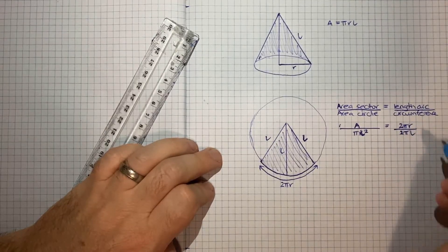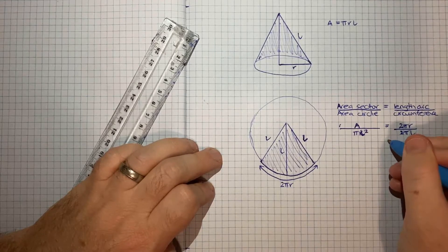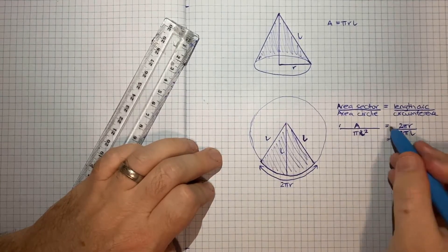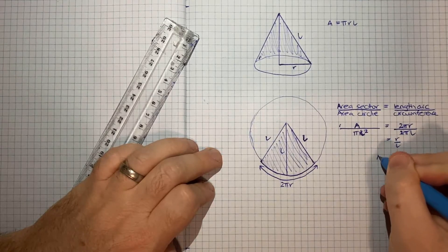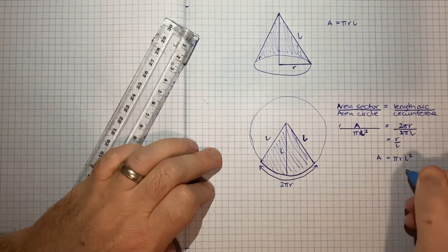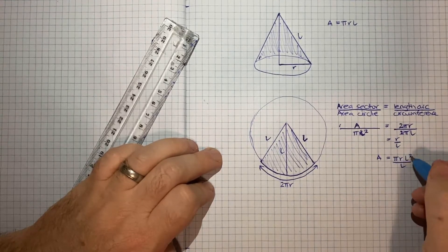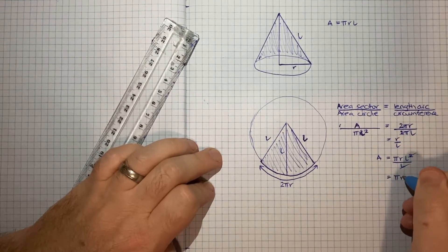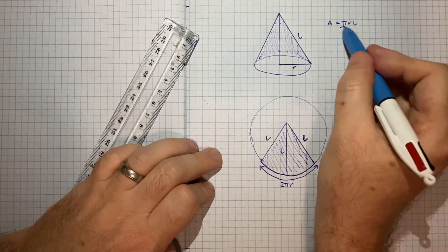And here the two pi's cancel, so that's equal to simply R on L. And if we bring up the pi L squared, we get A is equal to pi R L squared on L, and then these two cancel, and we get equal to pi R L, which is what we were asked to show.